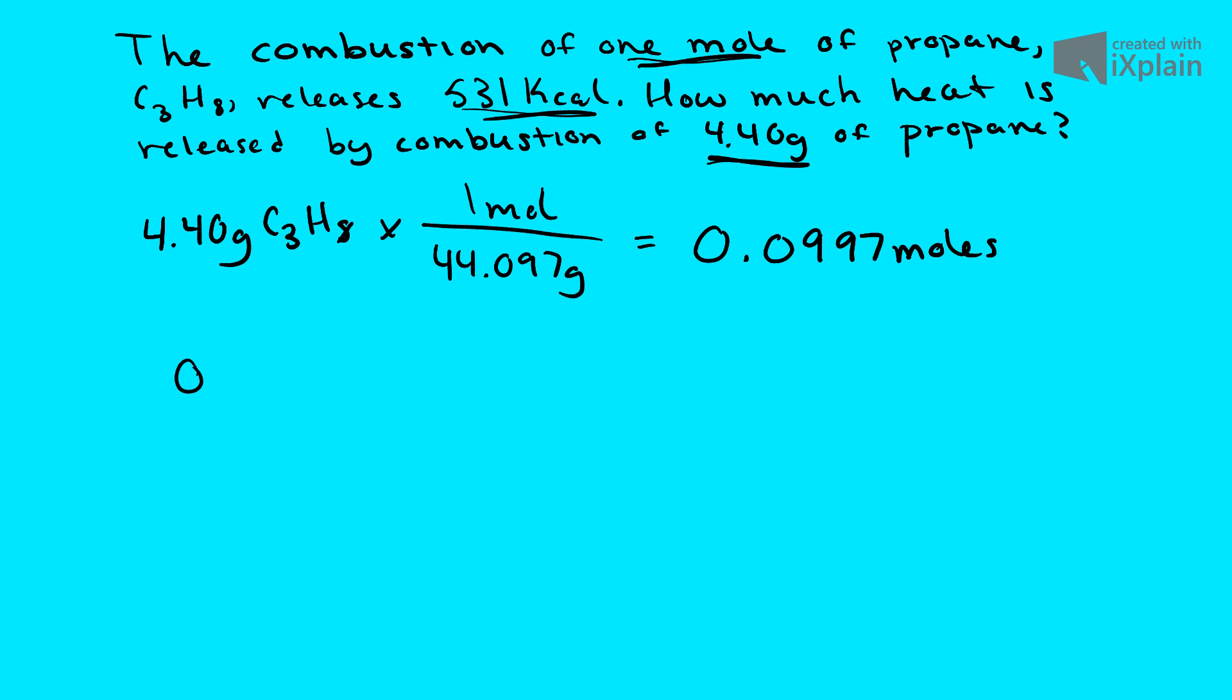And now we can just put that in the front, 0.0997 moles times, and we want moles to cancel out, so we put 1 mole of propane on the bottom. And we're multiplying that by 531 kilocalories.